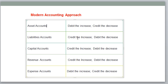For liabilities accounts: if liability is increasing, then credit. Liability is like debt — if debts are increasing, make it credit; if liability is decreasing, make it debit. For capital accounts: if capital is increasing, make it credit; if capital is decreasing, make it debit. For revenue accounts — revenue is like sales and income: if income is increasing, make it credit; if income is decreasing, make it debit. For expenses: if expense is increasing, make it debit; generally expenses are always debited.